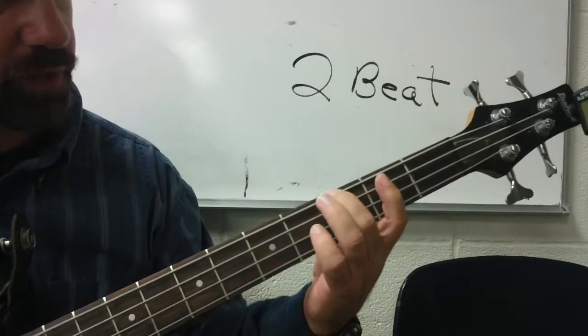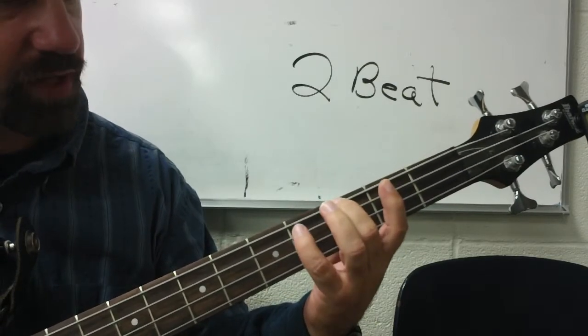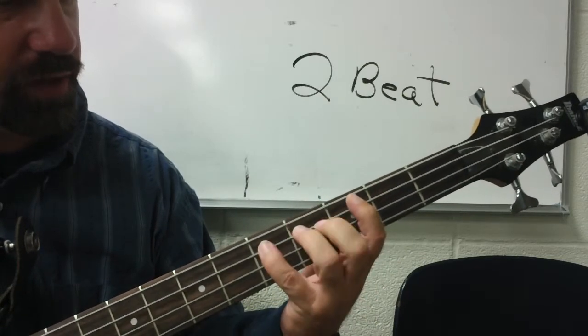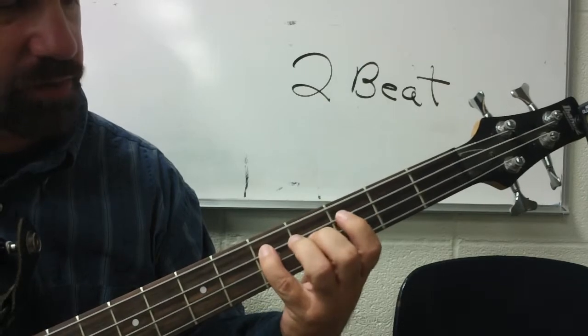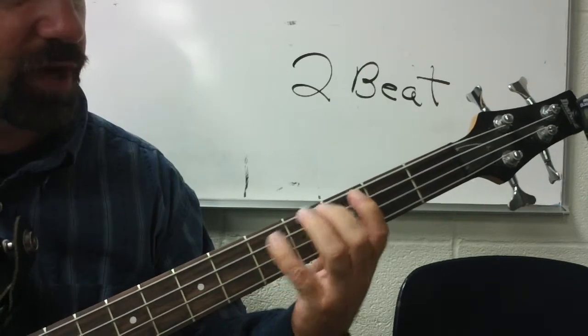We've got the root here — third fret on the E string is G — and then the fifth of that chord is going to be the note D on the A string, fifth fret.